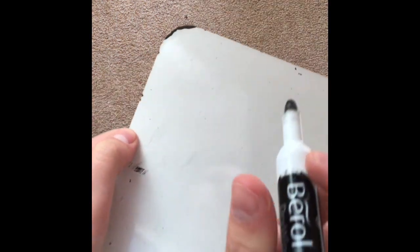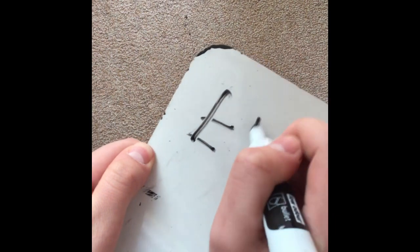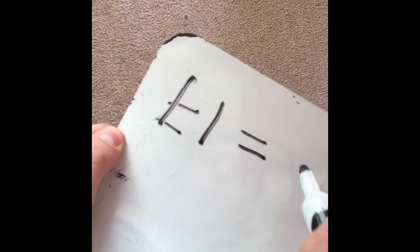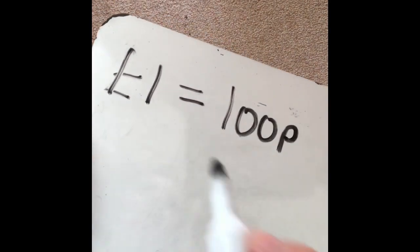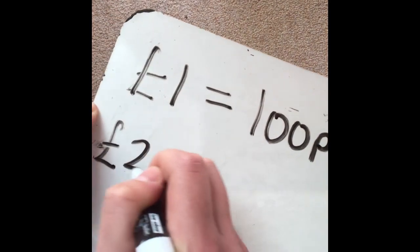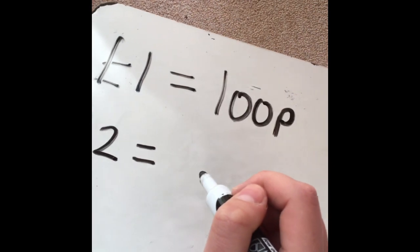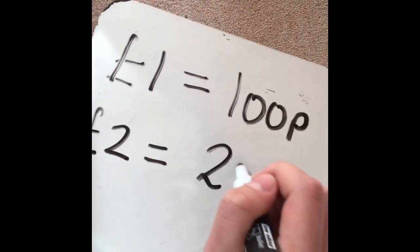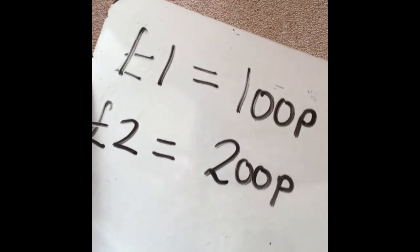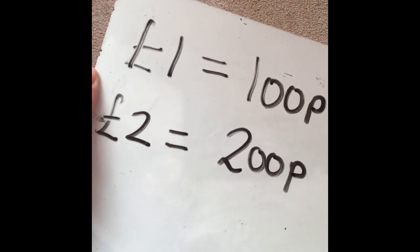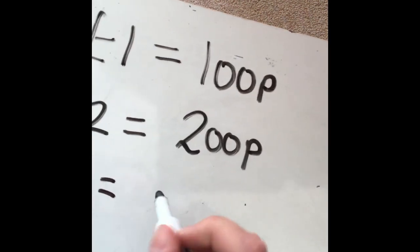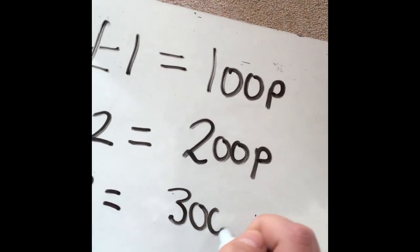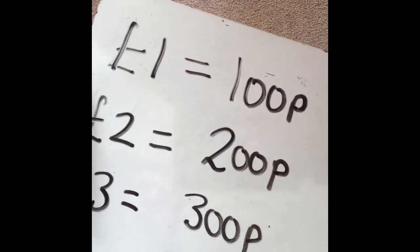So in today's lesson we are going to be converting between pounds and pence. If we have 1 pound, that is the same as 100 pence. So then if we had 2 pounds, that is going to be how many pence do you think? It's going to be 200 pennies — that's 200 1p coins. Now if we had 3 pounds, what's the pattern here? This is going to be 300 pennies, 300 pence.